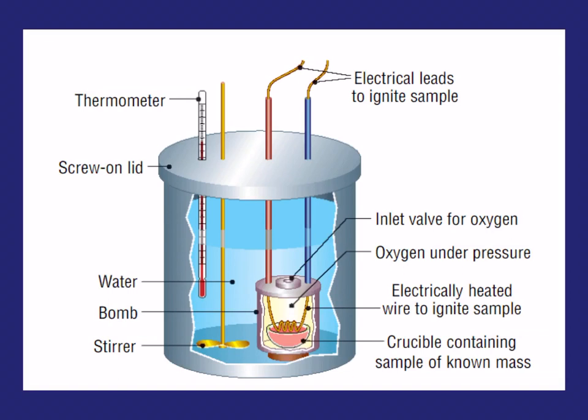Looking at the full setup, in the crucible at the bottom you have your sample of known mass — it's very important that the mass is known. An electrical wire is used to ignite the sample. The apparatus is sealed with oxygen under pressure, and the calorimeter is surrounded by water. The stirrer ensures that energy is spread evenly and that the water is homogeneous — it provides constant agitation so heat is distributed evenly throughout the water. A thermometer measures the temperature.